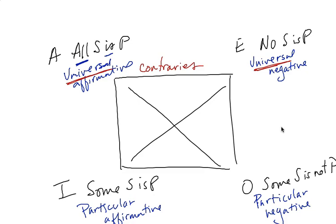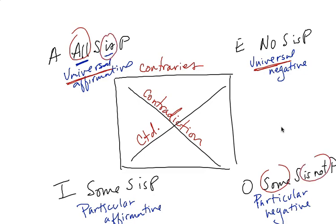I'll draw your attention to this diagonal. This is contradiction. Okay, contradiction here. And I'm going to abbreviate CTD for contradiction here. If you remember, a contradiction differs in quantity, all or some, and quality is or is not. Excuse me.